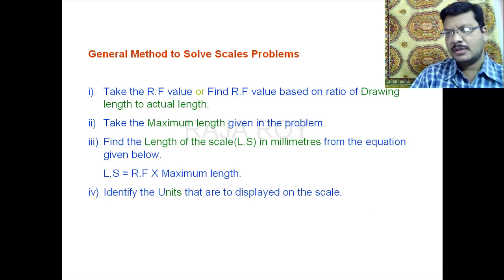This is the general method for solving any scales problem. This general method consists of four steps. Step one is take the RF value directly from the problem when it is given, or otherwise you have to find the RF value representative fraction from the drawing length and actual length. RF is the ratio of drawing length to actual length. That is the first step.